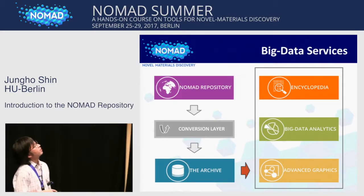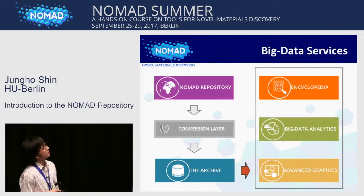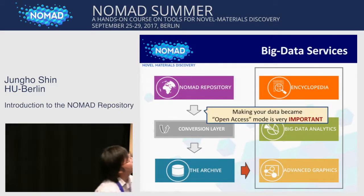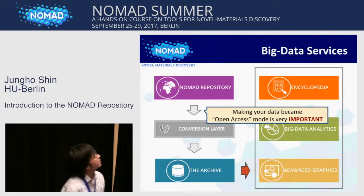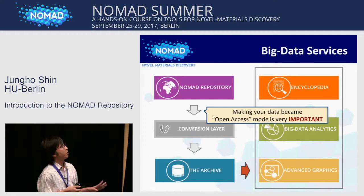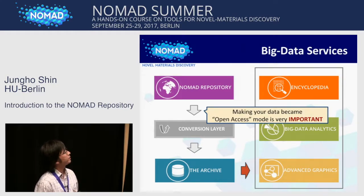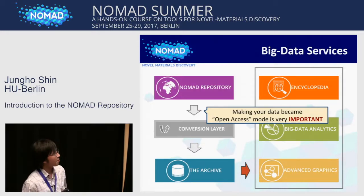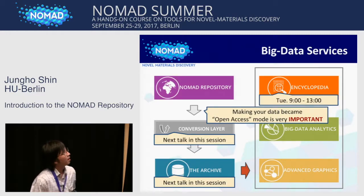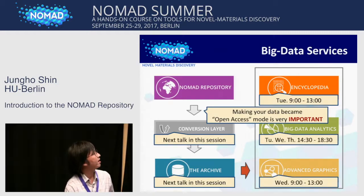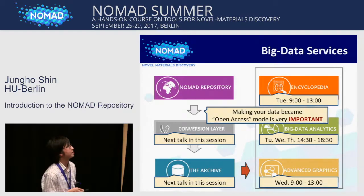What we are seeing here is that data from the repository is being propagated to further processes within NOMAD. What you should know about this figure is that making your data open access mode is very important, because only for open access data can this step be triggered. For details about this process — the conversion layer and the archive — that will be explained in the next talk. There is also another session for Encyclopedia, Big Data Analytics, and advanced graphics.